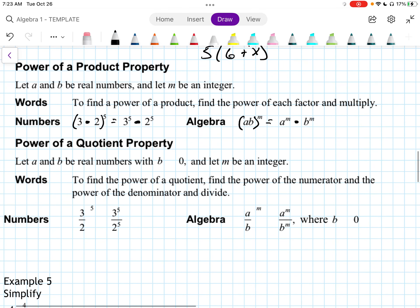This rule also works for division, for quotients. If we have 3 halves to the 5th, that would be 3 to the 5th over 2 to the 5th. In algebra, we could have A over B to the M would be equal to A to the M over B to the M. And, of course, B can't be 0.